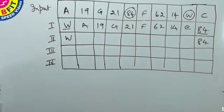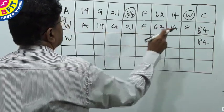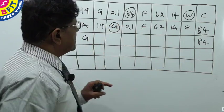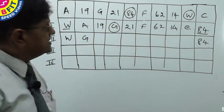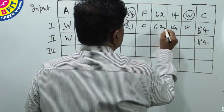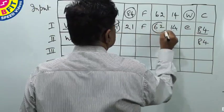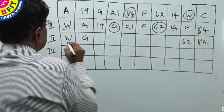What should be the next number? Remember, the alphabet which is lower than W — among A, G, F, C — obviously G is the alphabet. And the number lower than 84 — looking at 14, 62, 21, 19 — it is 62. So 62 comes here. Then we shall do shifting.